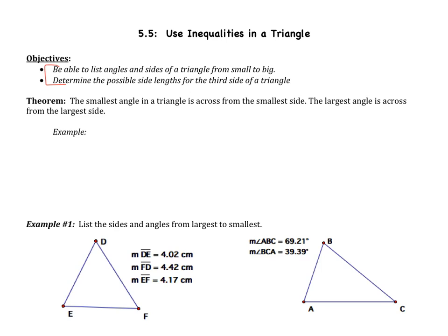We're going to jump right in with the theorem. The smallest angle in a triangle is across from the smallest side. The largest angle is across from the largest side.